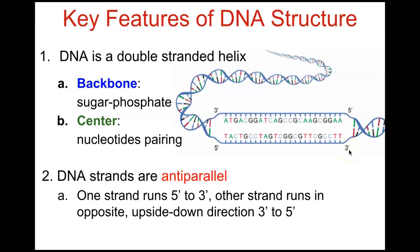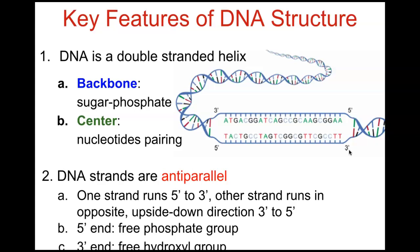The 5' end has a free phosphate group, and the 3' end has a free hydroxyl group. When referring to 3' to 5', you're looking at which carbon those phosphate groups and hydroxyl groups are attached to.